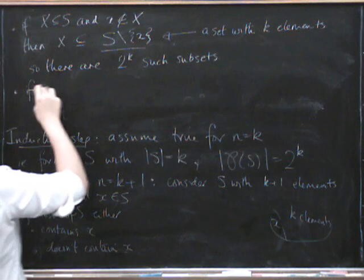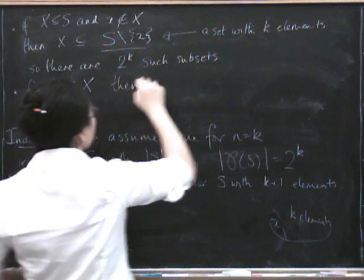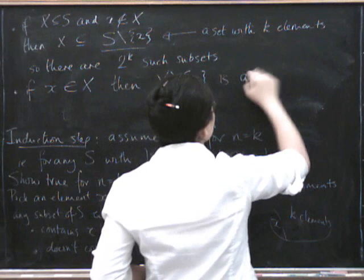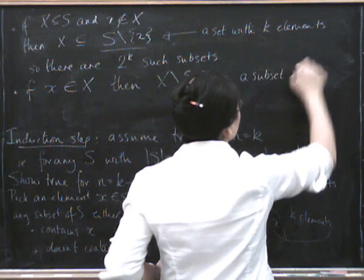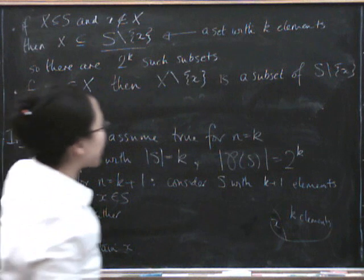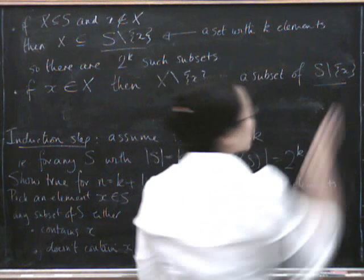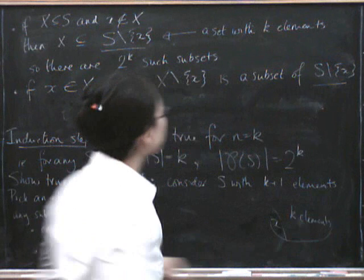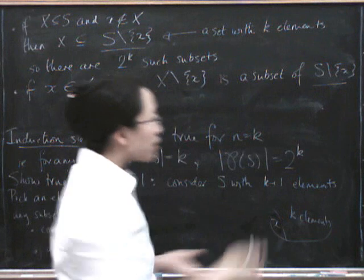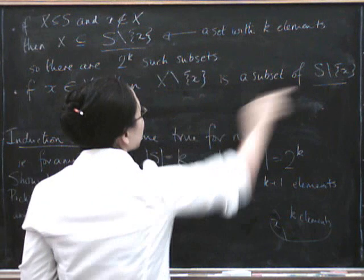So now the other case is if X is in X, then X with X removed is a subset of S with X removed. So in order to pick a subset that does contain X, we just have to pick the rest of the set and that has to be a subset of this thing. But again, this is a subset, this is a set with k elements. So what we have to pick is some subset of a set of k elements. So we know how many those are by the induction hypothesis. There are 2 to the k of those as well.